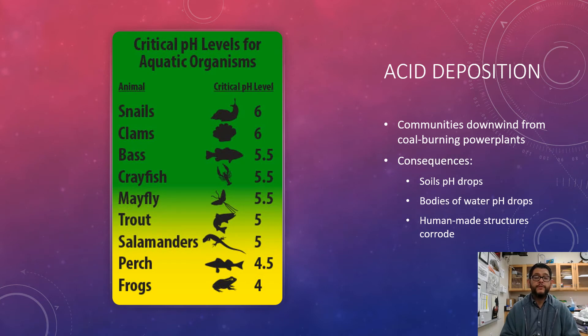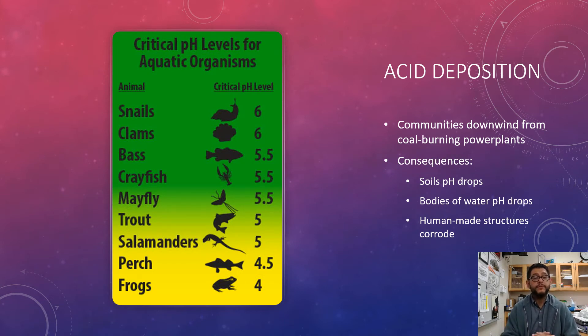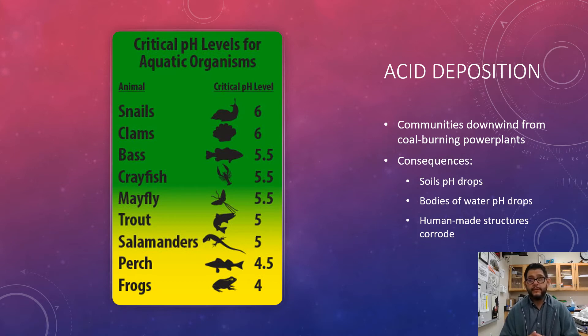This is a big problem because some organisms can't handle lower pH. As you can see here, these organisms may have different pHs that are critical for their life and survival.